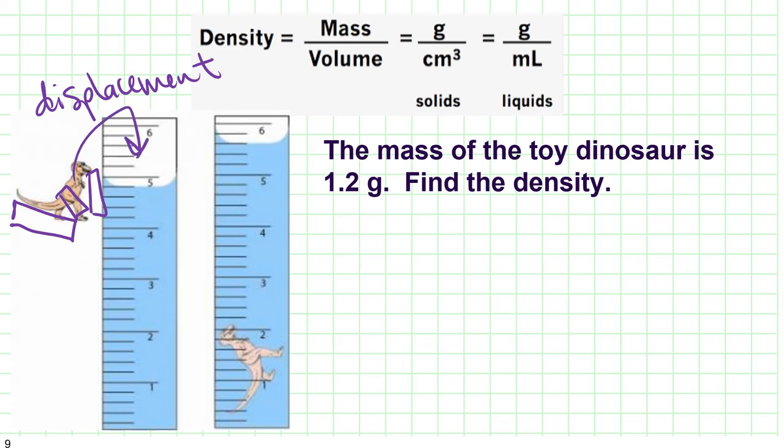But first, we're going to figure out how much water we have in the graduated cylinder. Looks like 4.2, 4, 6, 8, 4.8. Remember that we need that uncertain figure, milliliters of water. And then the dinosaur got added.